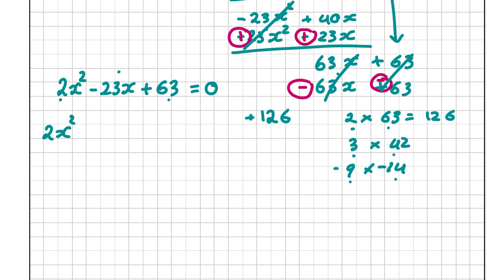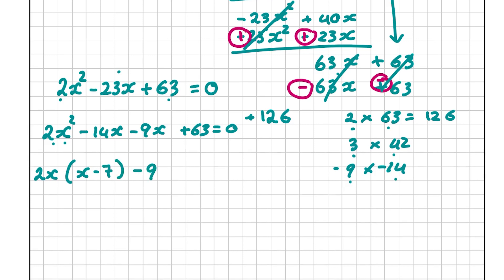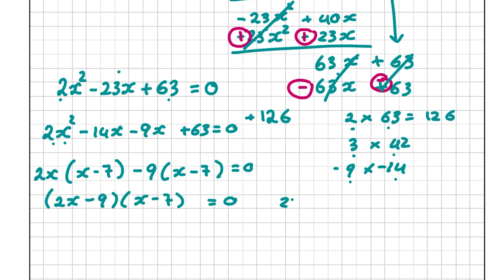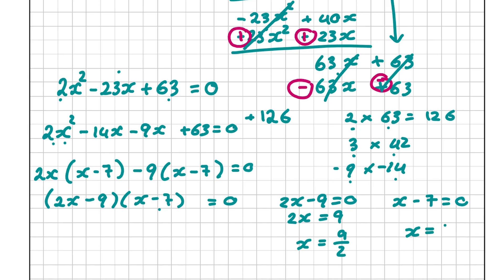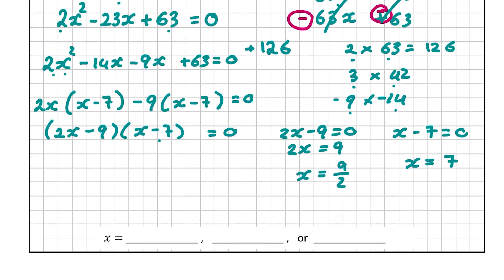So we have 2x squared minus 14x minus 9x plus 63 equals 0. Taking out 2x from the first two terms gives x minus 7; taking out minus 9 from the last two terms also gives x minus 7. So we have 2x minus 9 multiplied by x minus 7 equals 0. Therefore 2x minus 9 equals 0, so 2x equals 9, and x equals 9 over 2. And x minus 7 equals 0, so x equals 7.